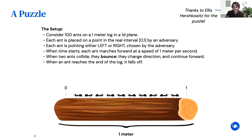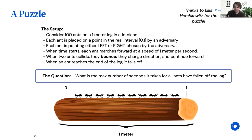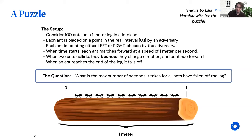Crucially, when ants reach the edge of the log, they fall off. The question is: what is the maximum number of seconds it will take for all of the ants to have fallen off the log? I'll give folks maybe just 30 seconds or so to think about it to yourselves, and then we'll hop into breakout rooms and discuss amongst the group to try and answer this question as a little instance of a research problem.